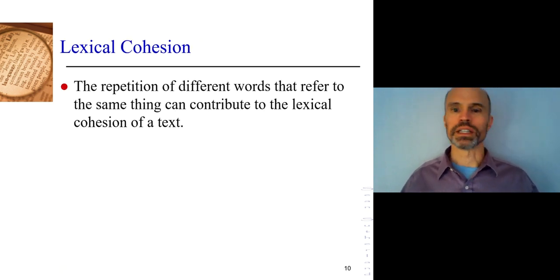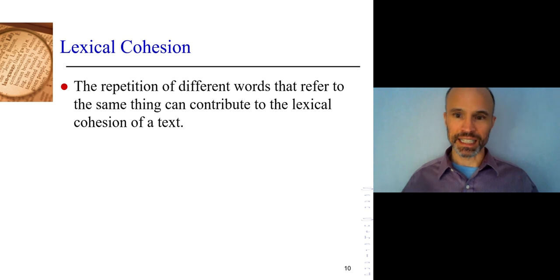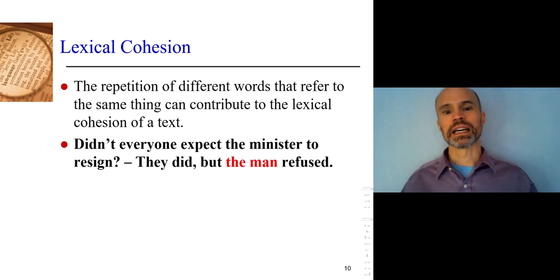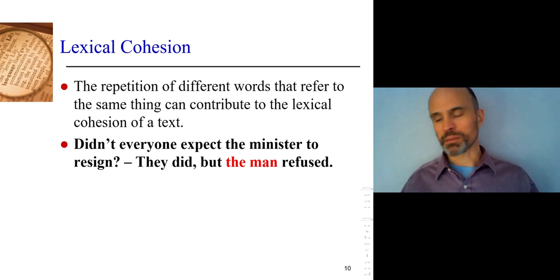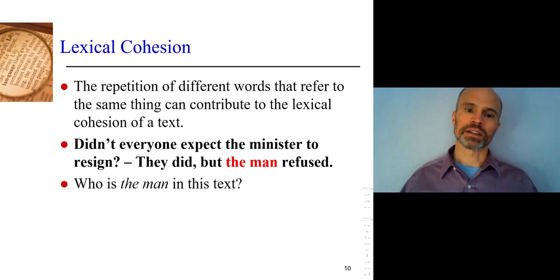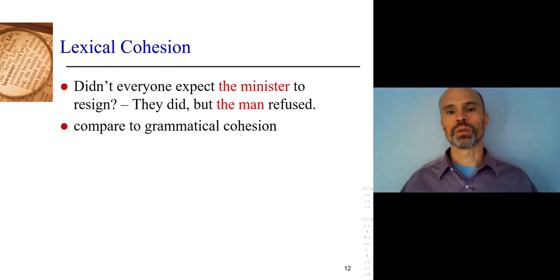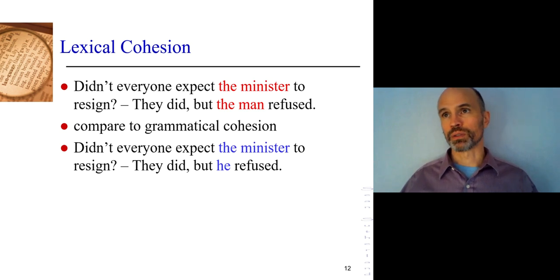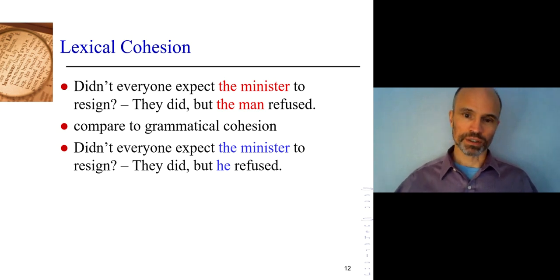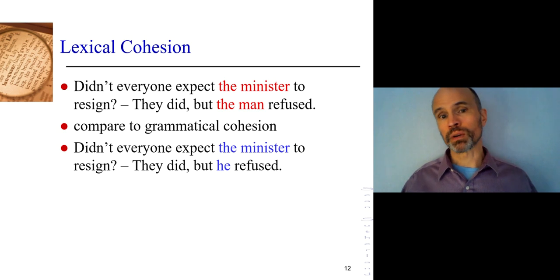So, lexical cohesion refers to things in the text in different ways. You can have it as simple as this: 'Didn't everyone expect the minister to resign? They did, but the man refused.' You're going to realize that 'the man' here must mean 'the minister.' It's not very complicated. How do you know that? Well, you could compare it to grammatical cohesion — where the pronoun 'he' would anaphorically refer to the minister. Instead, this person has used 'the man.'